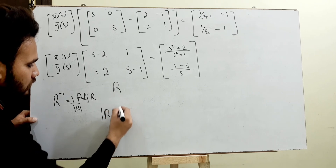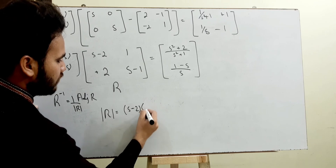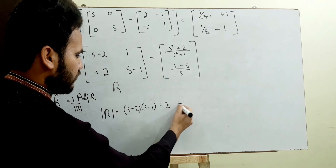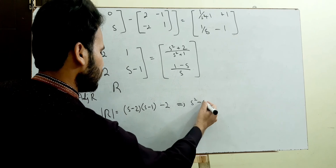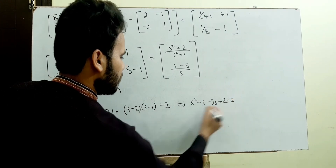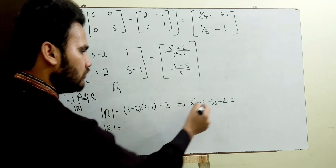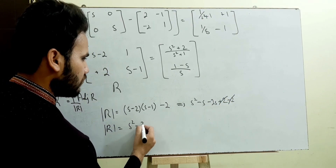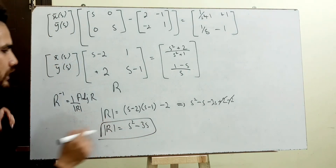The determinant of R: taking the matrix [s-2, 1; 2, s-1] directly, we get (s-2)(s-1) minus (1)(2), which equals s² - 3s + 2 - 2 = s² - 3s. So the determinant of R is s² - 3s.